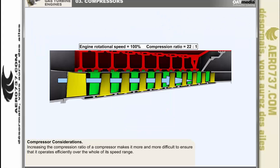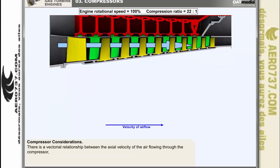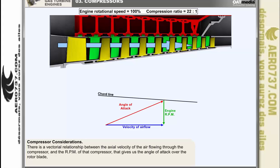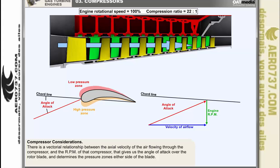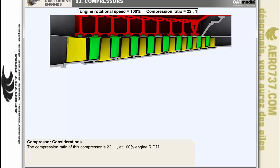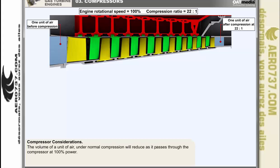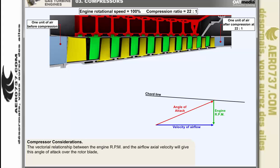Increasing the compression ratio of a compressor makes it progressively more and more difficult to ensure that it operates efficiently over the whole of its speed range. This diagram shows the vectorial relationship between the axial velocity of the air flowing through a compressor and the RPM of that compressor. That relationship gives us the angle of attack over the rotor blade and determines the pressure zones either side of the blade. If the compression ratio is designed to be 22 to 1 at 100% engine RPM, this diagram depicts the volume of a unit of air under normal compression reducing as it passes through the compressor at 100% power.